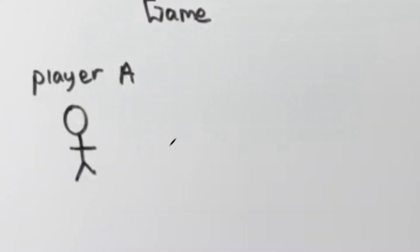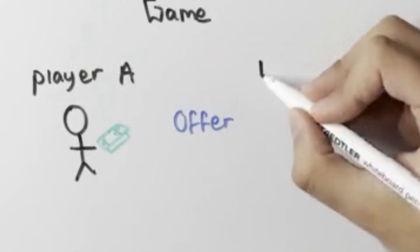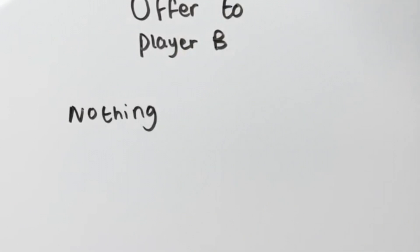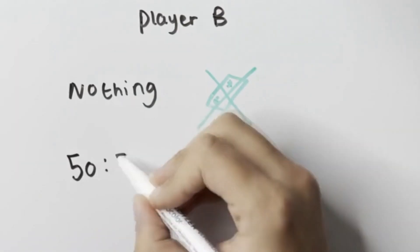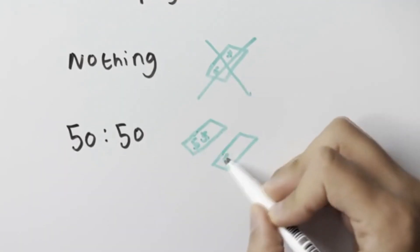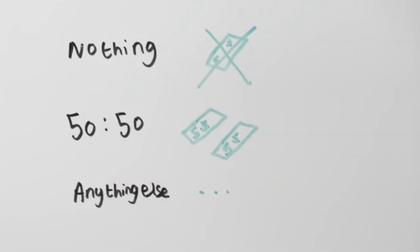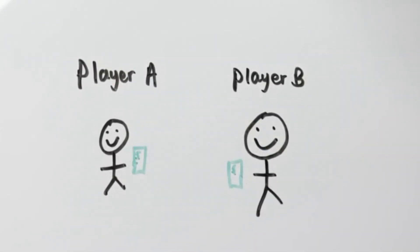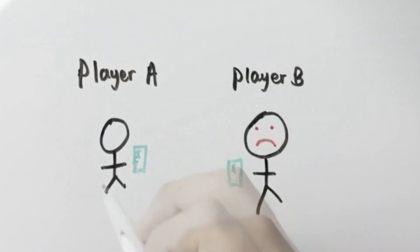You, player A, are given $10 and told that you have to make an offer to player B of how to split this money. You can offer to give him nothing and keep the $10 to yourself. You can offer to split it 50-50 and have $5 each or any other offer that you can think of. If player B accepts the offer then you both split the money as agreed, but if he rejects the offer then you both get nothing.